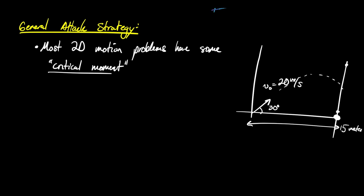The instant the ball has reached x = 15 meters, we stop the clock and ask: where is it up and down right before it hits the wall? So the critical moment is when the ball is at x = 15. All we need to do is calculate the vertical position at the time it took to get there, and that instantly tells us how high the ball is.